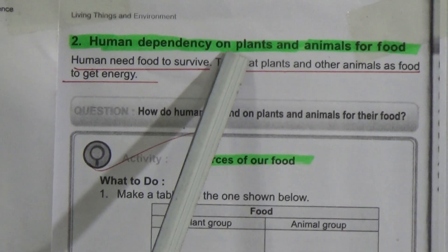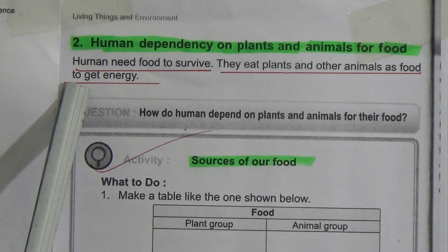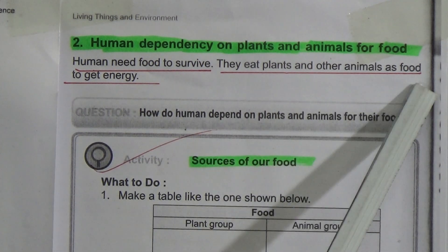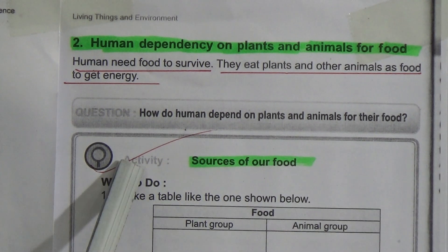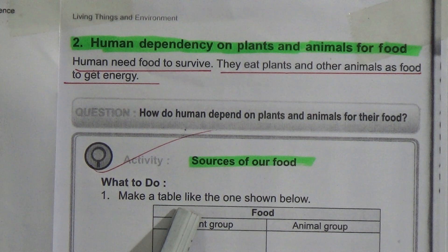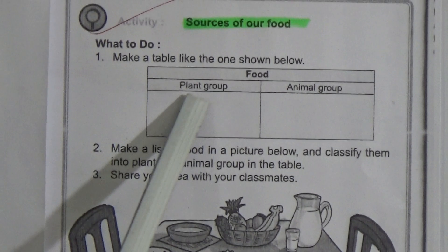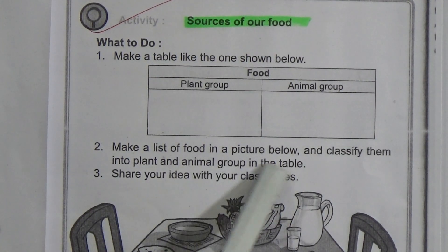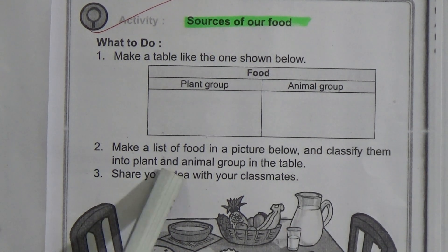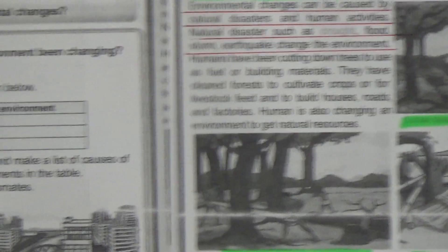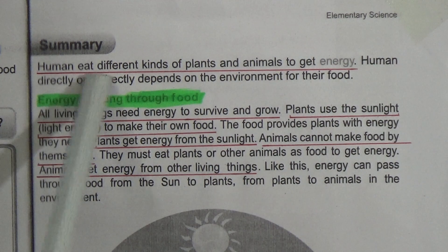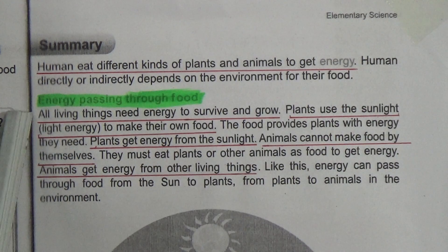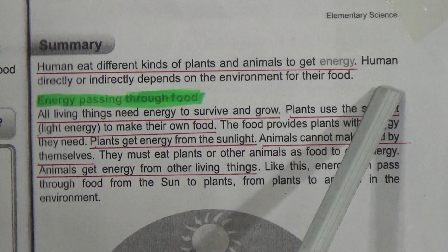Our next topic is 'Human Dependency on Plants and Animals for Food.' Humans need food to survive. They eat plants and other animals as food to get energy. Underline this line. Question: How do humans depend on plants and animals for their food? Activity: Sources of food. Make a list of food from pictures and classify them into plant group and animal group. Summary: Humans eat different kinds of plants and animals to get energy. Humans directly or indirectly depend on the environment for their food.